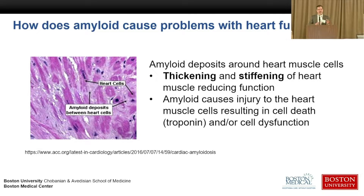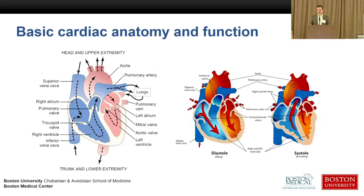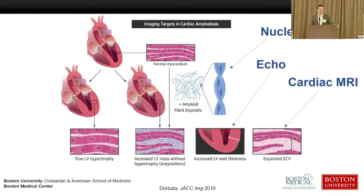We already learned that amyloid deposits in between heart muscle cells. It causes the heart to become thicker and stiffer, and it injures the heart muscle cells directly — that's why you have troponin elevation. High blood pressure and aortic stenosis also cause the heart muscle to become thicker, and if you just look at thickness, you can't tell the difference. Using imaging, we can tease this apart and determine whether that thickening is due to high blood pressure, aortic stenosis, or amyloid.